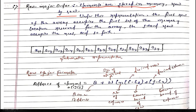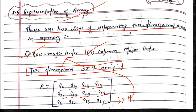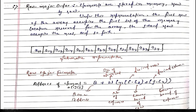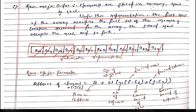Looking at the rows: the first row consists of a[1][1], a[1][2], a[1][3], a[1][4], then a[2][1], a[2][2], a[2][3], a[2][4]. In row-major order, all elements are stored row by row: a[1][1], a[1][2], a[1][3], a[1][4], a[2][1], a[2][2], a[2][3], a[2][4], a[3][1], a[3][2], a[3][3], a[3][4]. The first row occupies the first set of memory locations, and the second row occupies the next. This is known as row-major order.